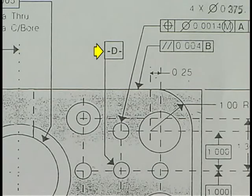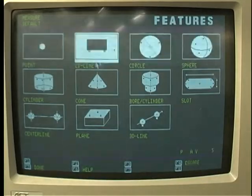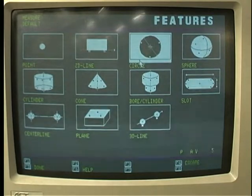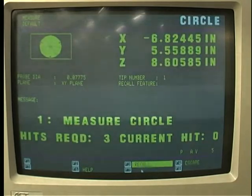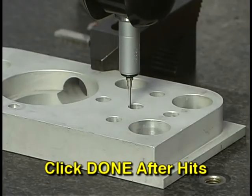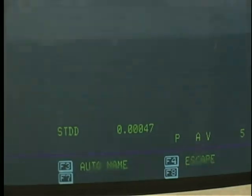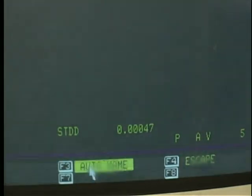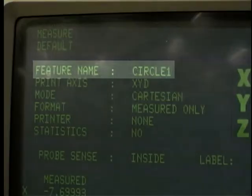The third axis to be established is datum D. Select measurements again. Since datum D is the center of a hole, circle selection is used. While three hits must be taken to locate the hole center, four are taken to get the standard deviation. Click done to complete the calculation. After the hits are completed, check the deviation. Auto name the feature and it will be circle 1.